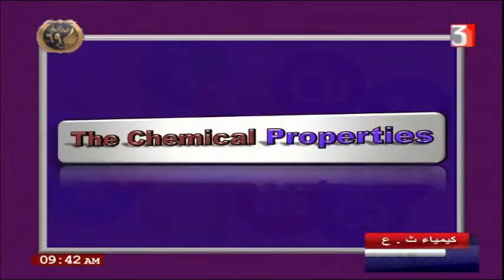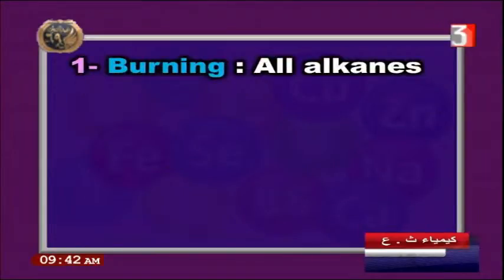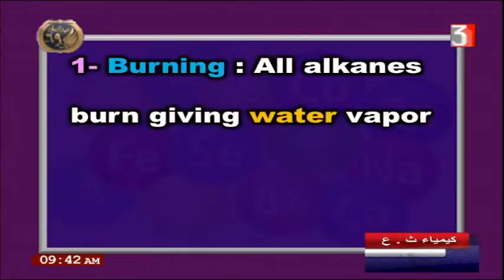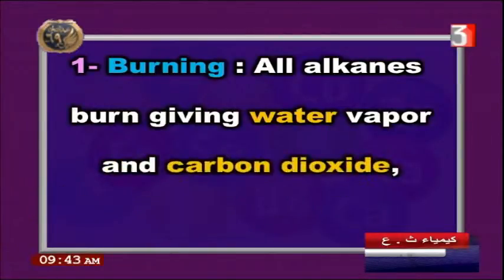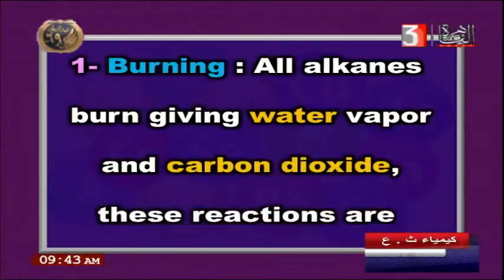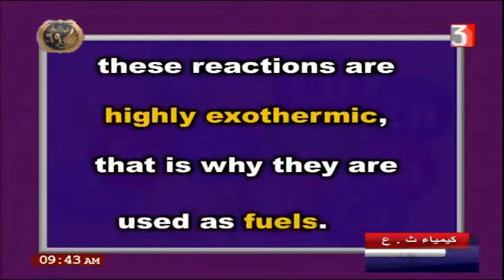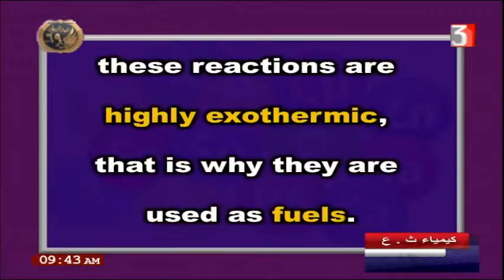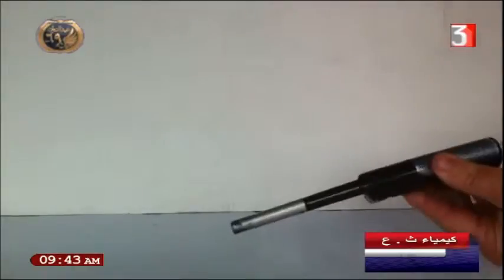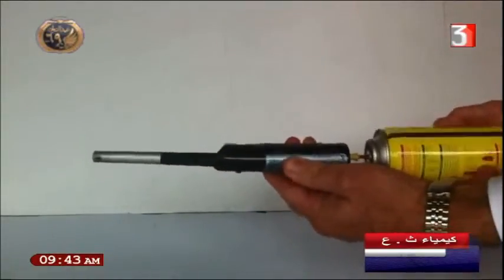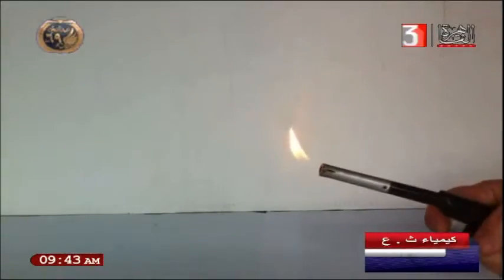Regarding chemical properties: all alkanes burn, producing water vapor and carbon dioxide. These combustion reactions are highly exothermic — they release a large amount of heat — which is why alkanes are used as fuels. A tube containing butane gas will burn when ignited because butane is a fuel.